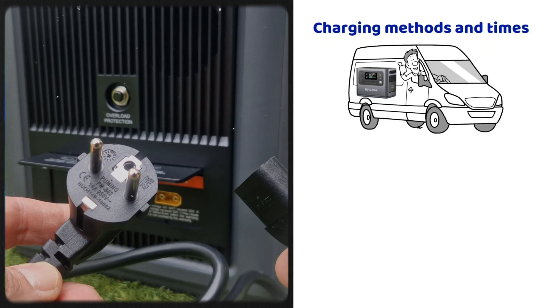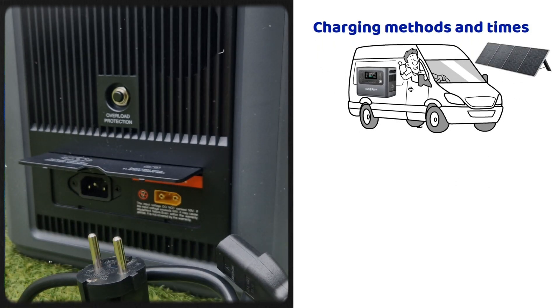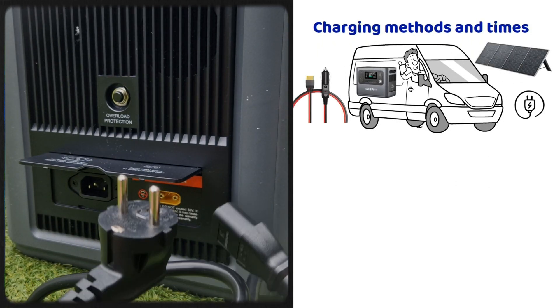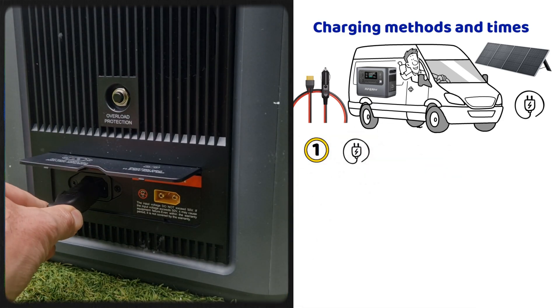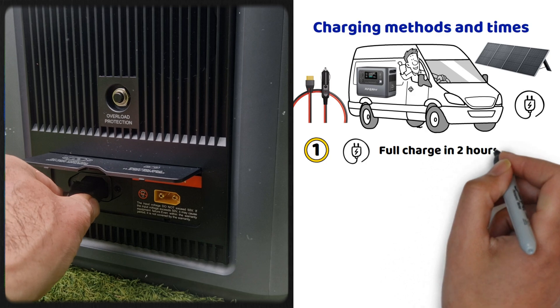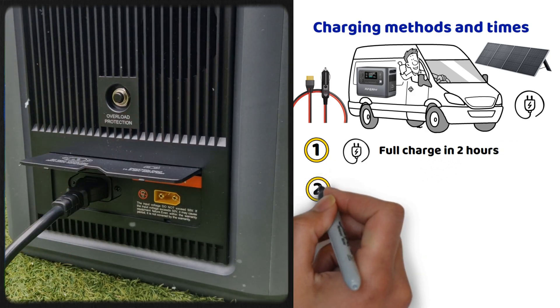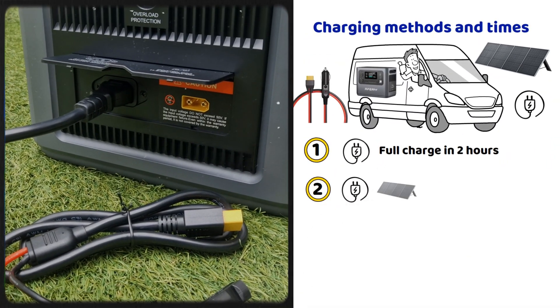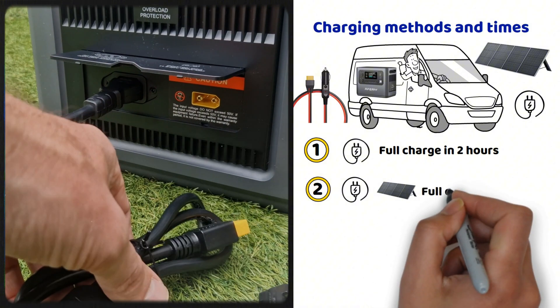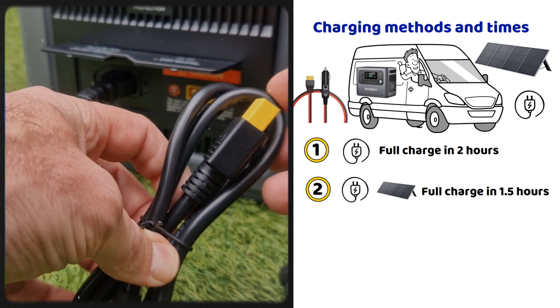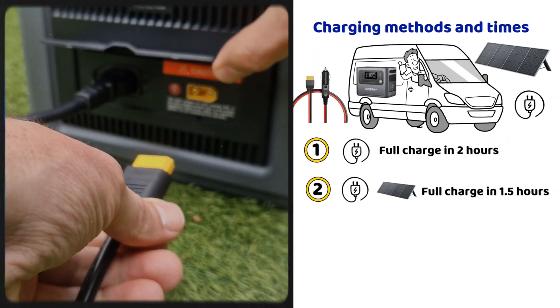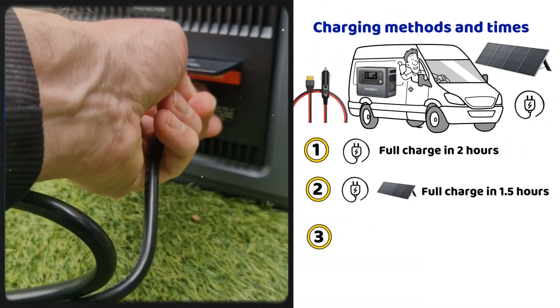What interests us most in a camper van is the charging methods. The big advantage of an Aferiy portable power station is that it can be moved and plugged into a standard outlet more easily without needing to be near a DC service socket. The Aferiy P210 power station offers four ways to recharge. Using a standard outlet, a full charge is estimated to take about two hours, which is very fast. You can also combine outlet charging with solar panel charging, reducing the time to one and a half hours with panels providing up to 500 watts.